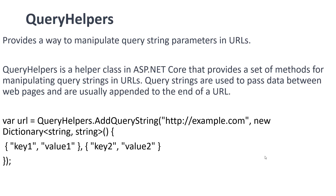The next helper is Query Helper, which provides a way to manipulate query string parameters in the URL. Query Helper is a helper class in ASP.NET Core that provides a set of methods for manipulating query strings in URLs. Query strings are used to pass data between web pages and are usually appended to the end of the URL, typically as key-value pair dictionaries.